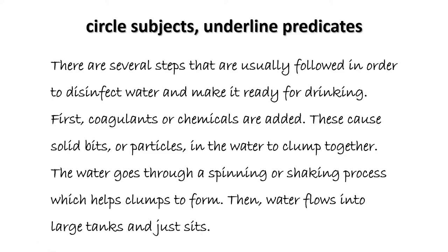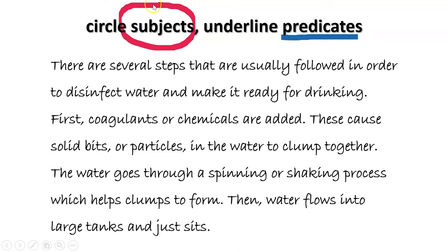We have the paragraph here. What we're going to do is circle the subjects and underline the predicates. You've just learned that the subject is who or what, and the predicate is what it actually did. I'm going to read this paragraph and you're going to think about the subjects and predicates. There are several steps that are usually followed in order to disinfect water and make it ready for drinking. First, coagulants or chemicals are added. These cause solid bits or particles in the water to clump together. The water goes through a spinning or shaking process which helps clumps to form. Then water flows into large tanks and just sits.